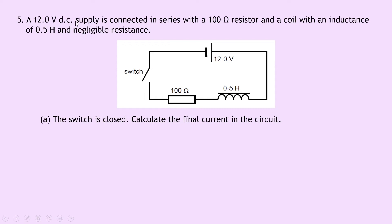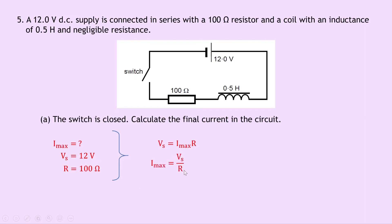Question 5 says that a 12 volt DC supply is connected in series with a 100 ohm resistor and a coil with an inductance of 0.5 Henrys and negligible internal resistance. Part A says the switch is closed — calculate the final current in the circuit. We're trying to find Imax. Using Ohm's law, Vs equals Imax times R, so Imax equals Vs divided by R. Substituting in 12 over 100 gives a final answer of 0.12 Amps.